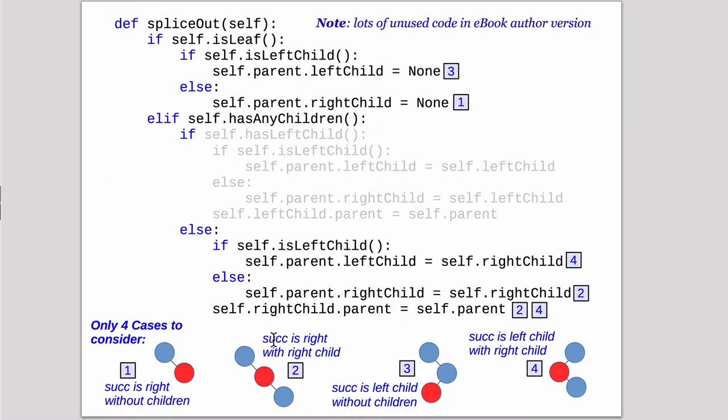The second case is the successor is the right but it does have a right child. So in this case here's the node we're going to delete. Here's the right child. It has no left child so that's going to be the successor. But it does have a right child. We have to link the right child back to point here.